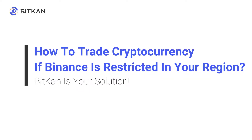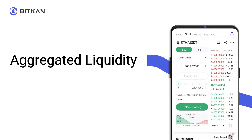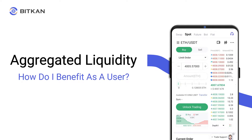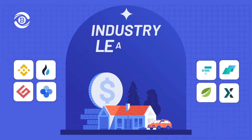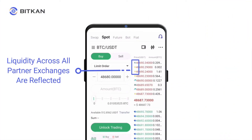How to trade cryptocurrency if Binance is restricted in your region — we have the solution for you. Did you know that BitCan has aggregated liquidity across eight leading partner exchanges? This means that all trade options across partner exchanges such as Binance and Huobi can be found on BitCan. You no longer need to risk using a VPN to trade on these exchanges.